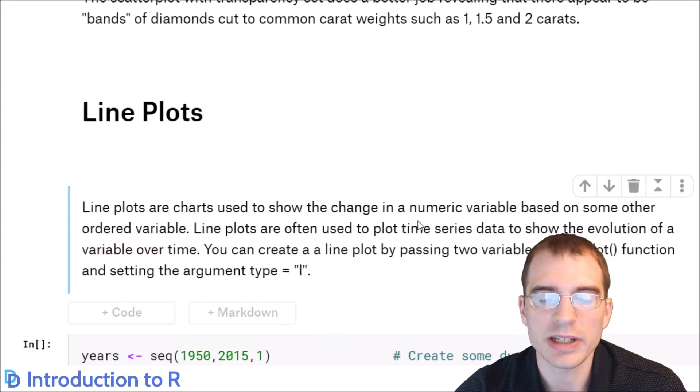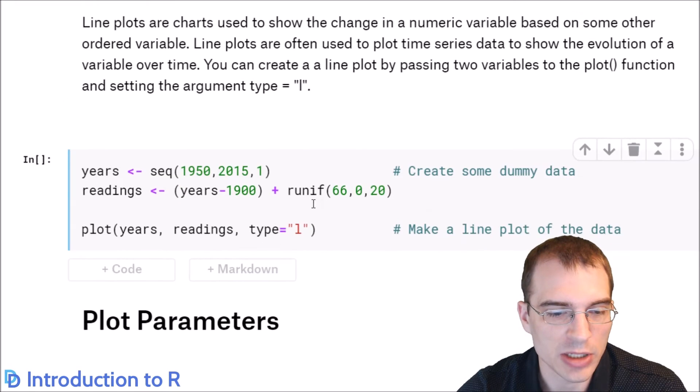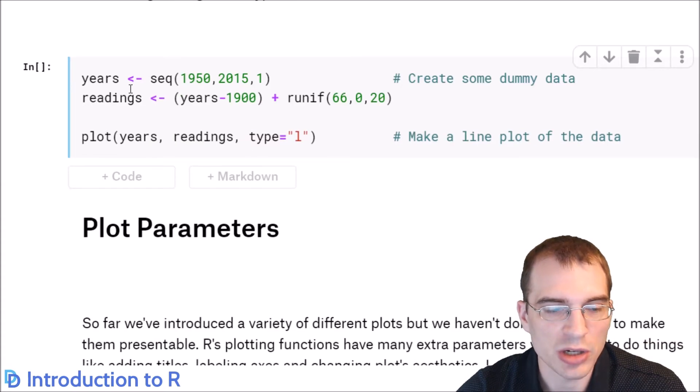For plotting data related to dates, it's common to use line plots with the date on the x-axis and some other numeric variable you might be interested in on the y-axis. So we'll look at how to make a line plot in base R. First, we're just going to generate some fake year data so that we can plot it and some readings to plot on the y-axis.